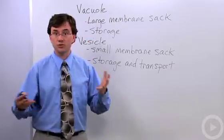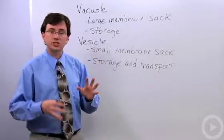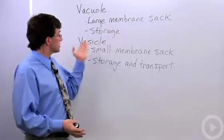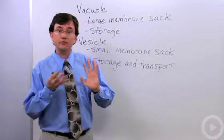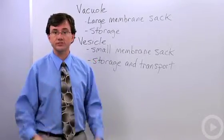Vac, you've seen before in words like vacuum, which means an empty space. So vacuoles are just membrane sacs inside of a cell, and just similarly, there's smaller versions of vacuoles called vesicles. Both of these membrane sacs are used for storage of materials.